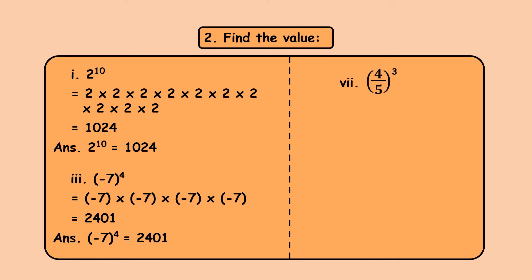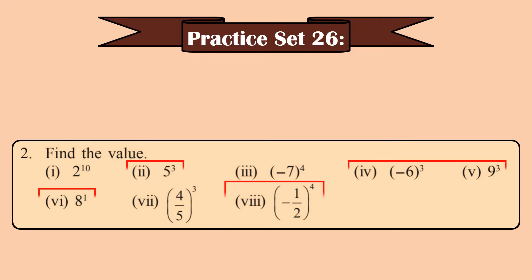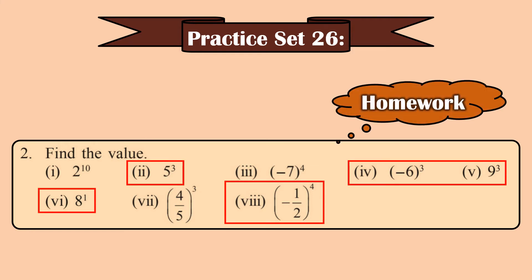Sum number 7 is the fraction 4 upon 5, the whole raised to 3. That equals 4 upon 5 into 4 upon 5 into 4 upon 5. Multiply all your numerators together and your denominators together to get the answer 64 upon 125. I have solved three sums from this exercise; the remaining sums I am giving as homework. Once you understand the concept and the pattern of solving, every sum is easier because they all follow a particular pattern.